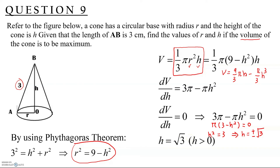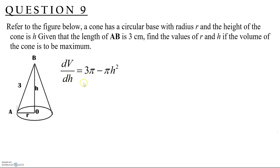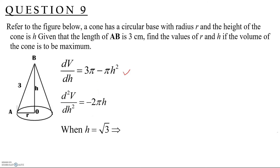We need to verify this is a maximum using the second derivative test. From dV/dH = 3π − πH², differentiating again gives d²V/dH² = -2πH. At H = √3, the second derivative is negative (less than zero), confirming this is a maximum point.